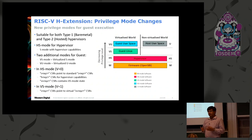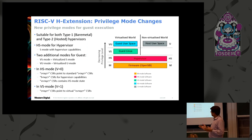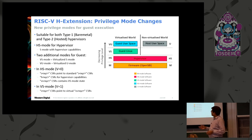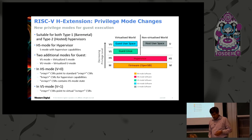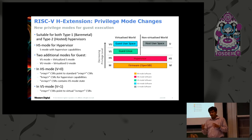What changes are there in RISC-V ISA due to the H-extension? The overall idea is to make the H-extension spec suitable for both type 1 and type 2 hypervisors. We have a new HS mode for hypervisors, which is nothing but S mode with additional hypervisor capabilities, so any traditional S mode OS will continue to run in HS mode unmodified. We also have two additional modes for guests: VS mode — a virtualized S mode for running Linux inside a guest VM — and VU mode for the guest virtualized user space. In HS mode we have three types of CSRs: traditional S mode CSRs prefixed with S, H-prefix CSRs for hypervisor capabilities, and VS-prefix CSRs which allow HS mode to access the state of the guest or VM.